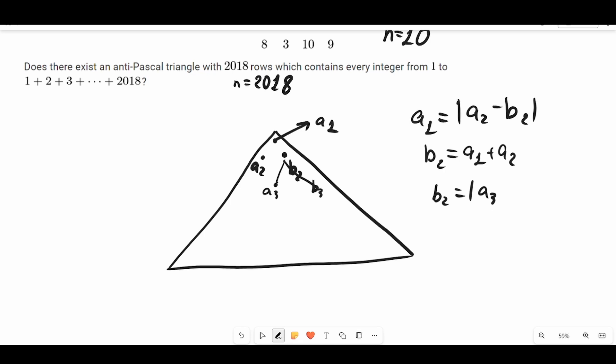Also assume that b3 is more than a3, so b3 must equal a3 plus b2. This means that b3 equals a1 plus a2 plus a3. Clearly we can continue this process until we get the final step.